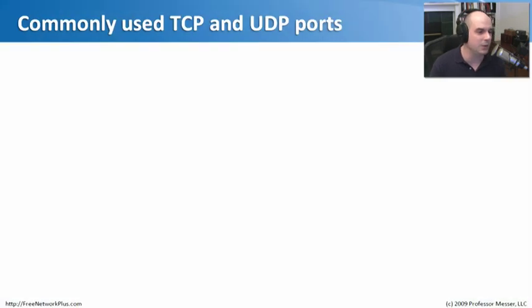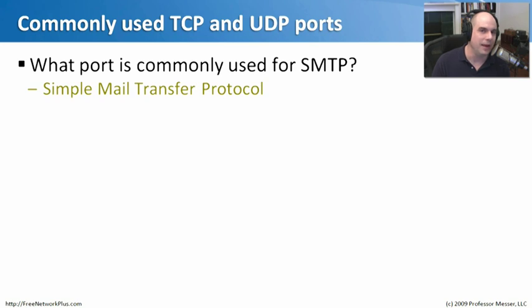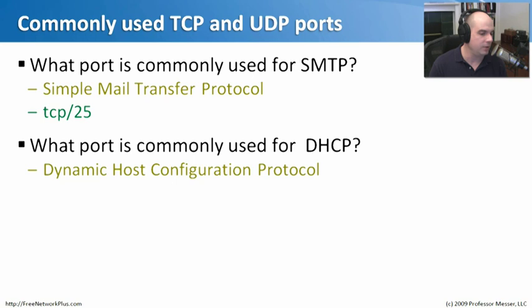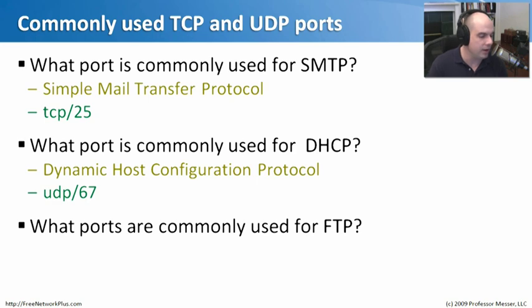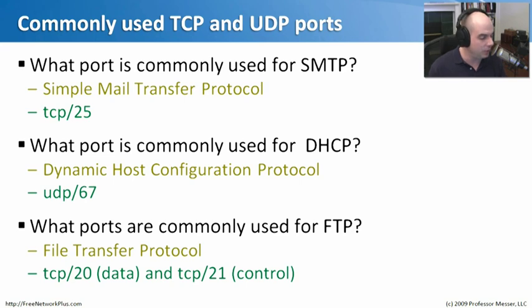Let's go through a few commonly used TCP and UDP ports. What port is commonly used for SMTP? That's Simple Mail Transfer Protocol and it uses TCP port 25. What port is commonly used for DHCP? DHCP, Dynamic Host Configuration Protocol, runs over UDP port 67. What ports are commonly used for FTP? There were two: TCP port 20 for data and TCP port 21 for control communication.